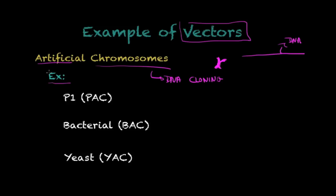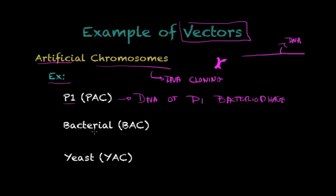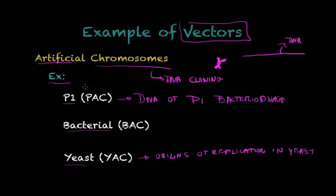Popular examples of artificial chromosomes used in research are: the P1 artificial chromosome (PAC), which is based on the DNA of a P1 bacteriophage — a virus that uses bacteria as its host; the bacterial artificial chromosome (BAC); and the yeast artificial chromosome (YAC), which has origins of replication in yeast. These are the most relevant examples you need to know.